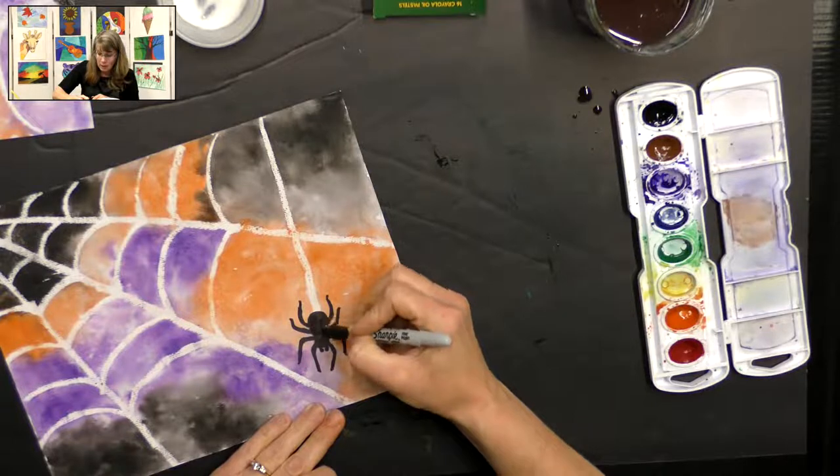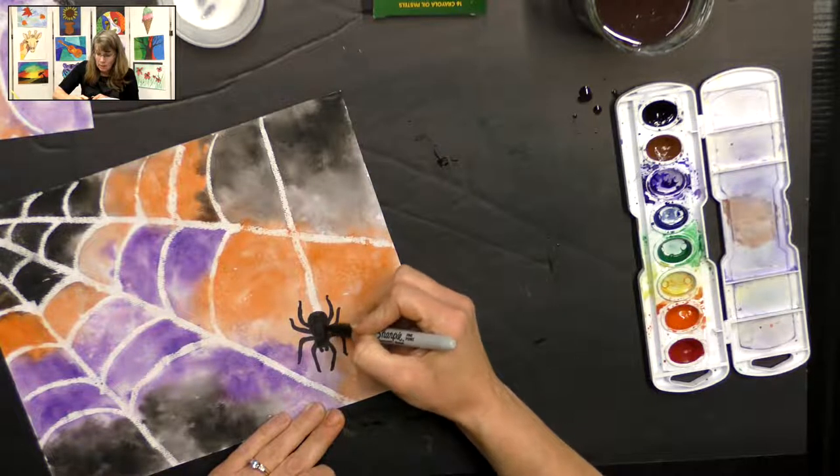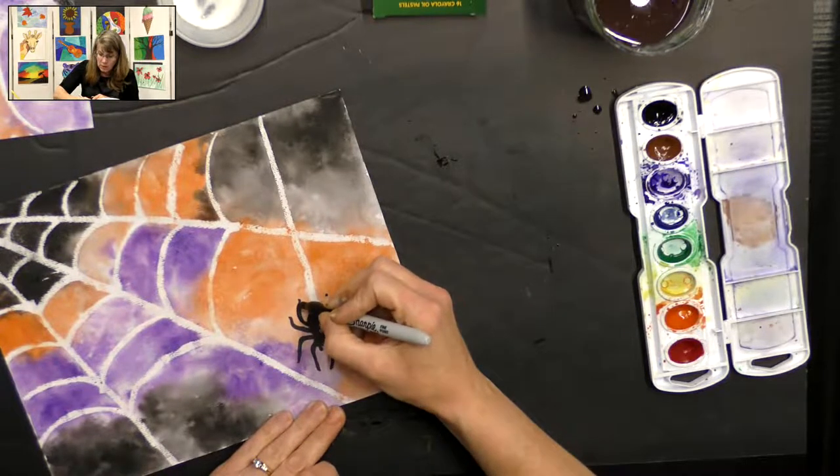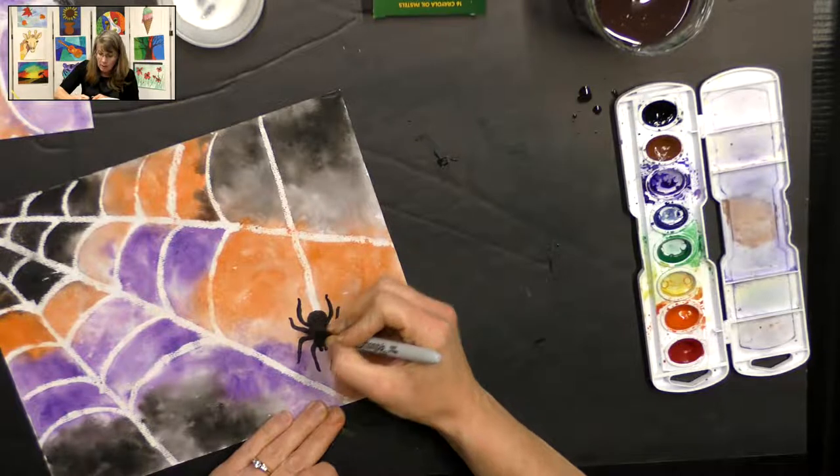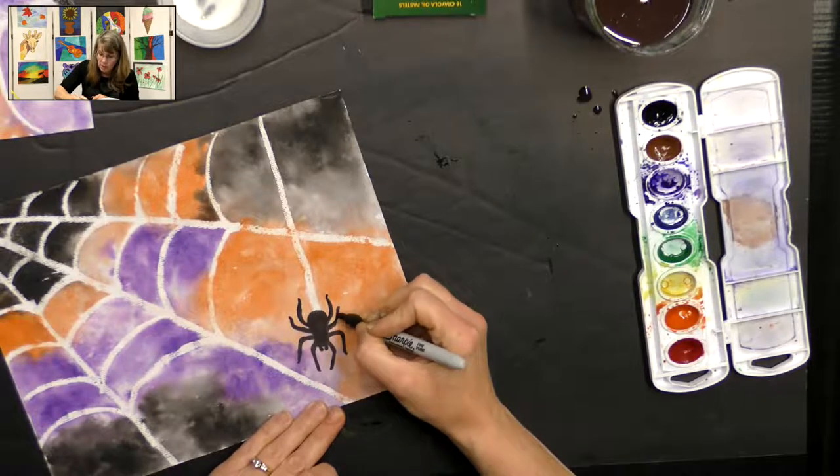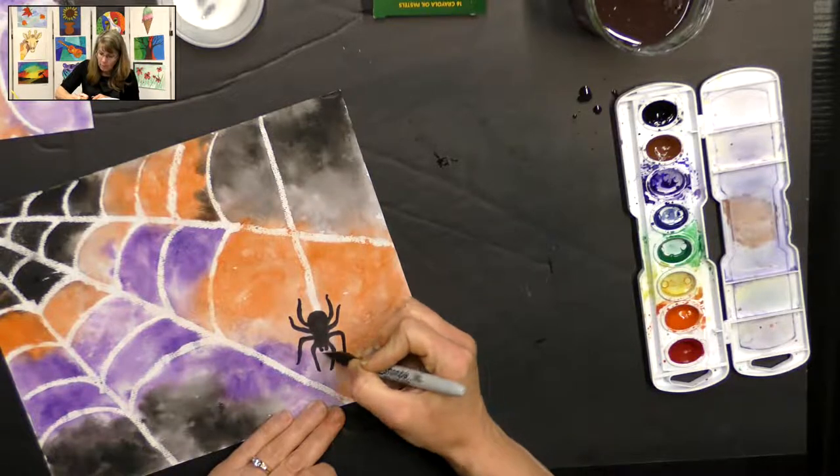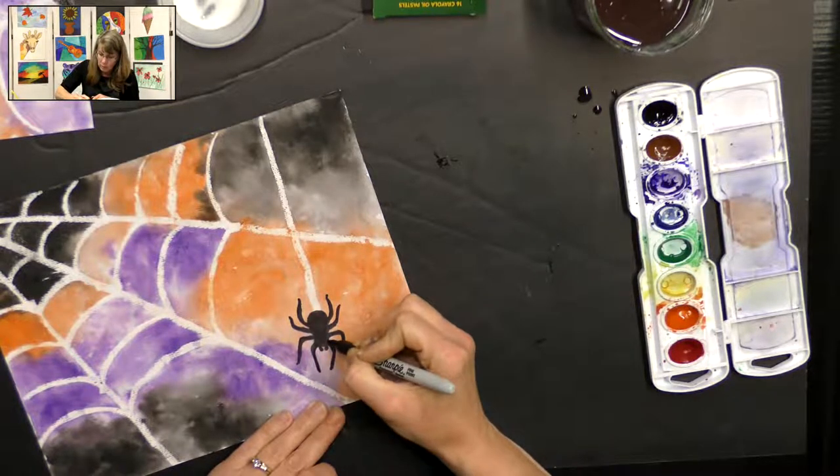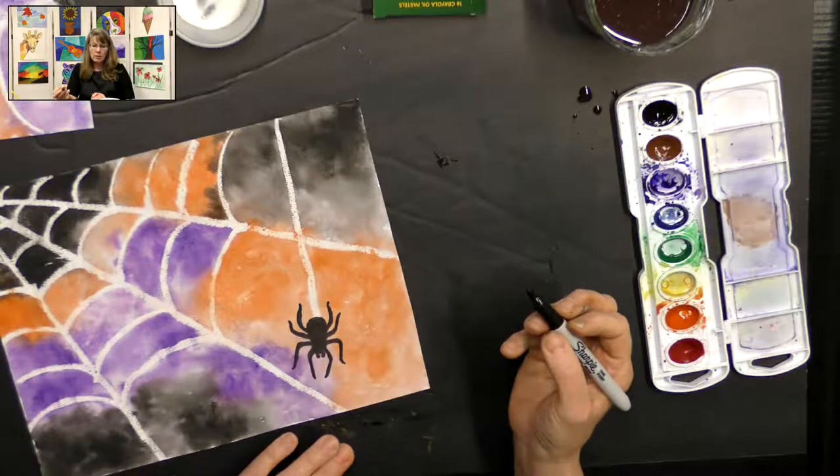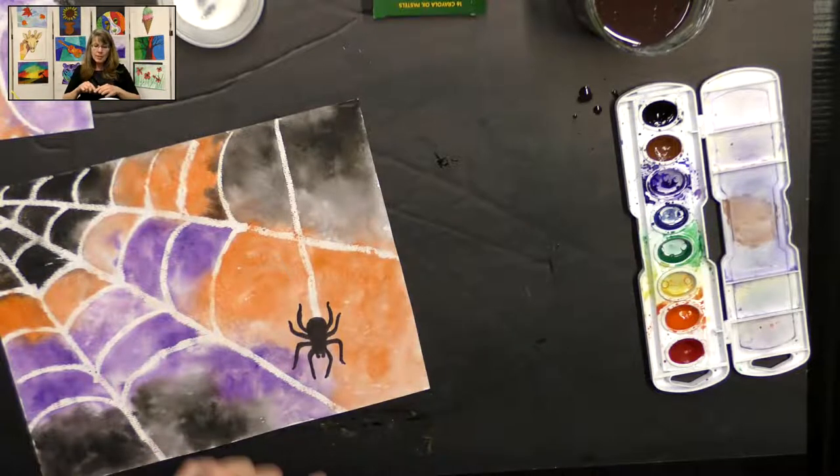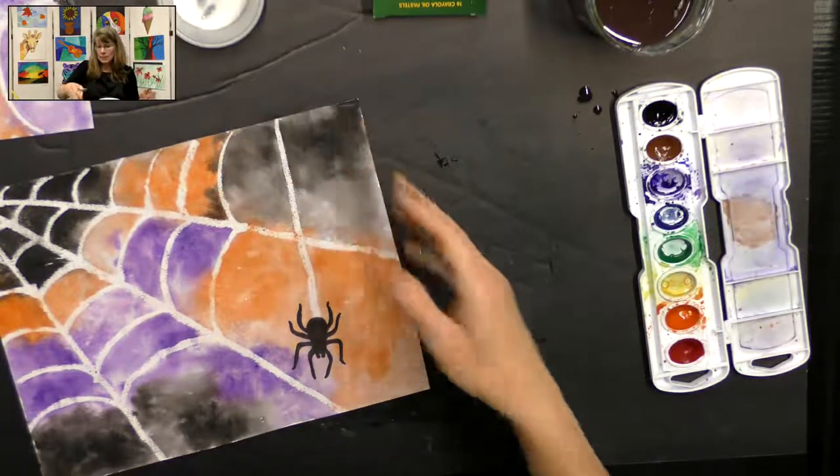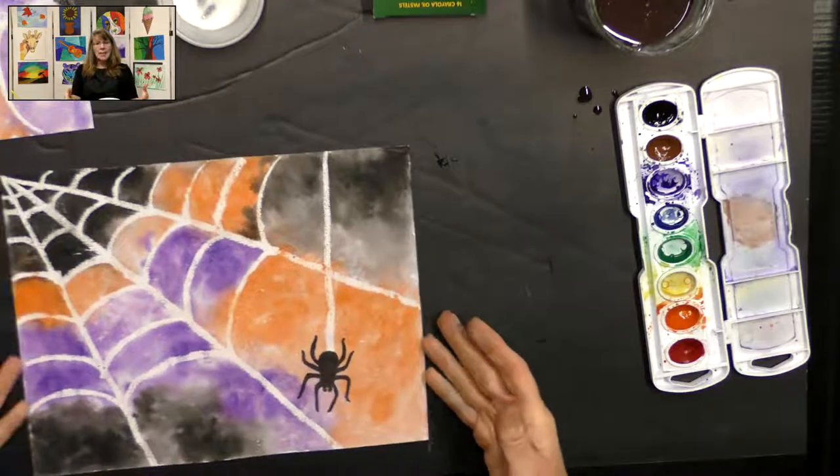And then what I did is I had a picture of a spider, a silhouette, and I just drew my silhouette with my sharpie. So once it's dry you can just take your sharpie and draw your spider and just make sure that you fill it all in solid with the black sharpie. And you can look up a picture of a spider or you can just draw from your memory what you think your spider will look like because different spiders look different.